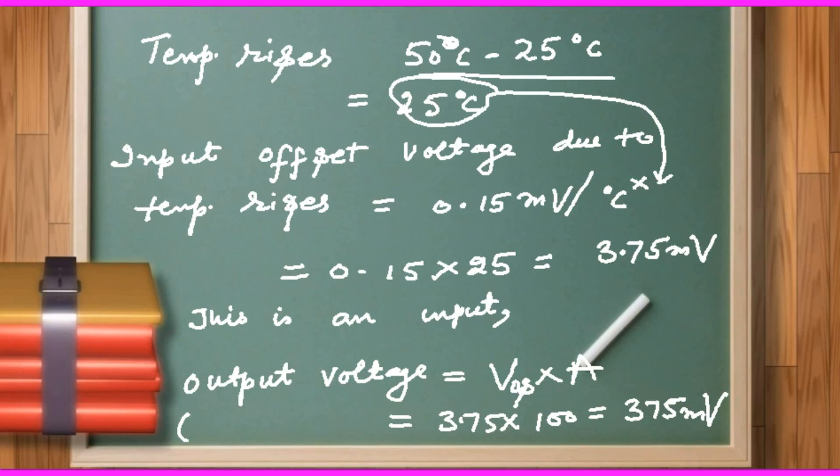So, if the temperature rises by 25 degrees Celsius, there will be effect on the input offset voltage. That effect is 3.75 millivolt, then that effect goes to the output side. That output voltage is 8 times the input offset voltage. That becomes 375 millivolt as a result.